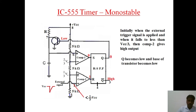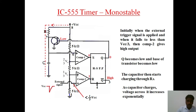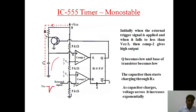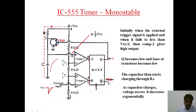Comparator 2 gives high output and comparator 1 gives low output. As comparator 1 gives low output, Q becomes 0. As Q becomes 0, the base of the transistor becomes low, so the base-emitter junction is not forward biased, and the transistor is as good as cut off. Therefore, current starts flowing from the supply through R towards the capacitor, and the capacitor starts charging. As the capacitor charges, the voltage across it increases exponentially, and the voltage at pin number 6 also increases exponentially. As soon as the voltage at pin number 6 becomes slightly greater than 2/3 Vcc, comparator 1 gives high output.